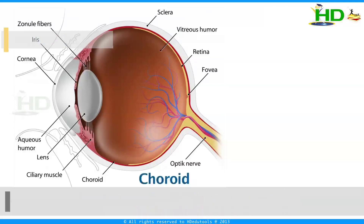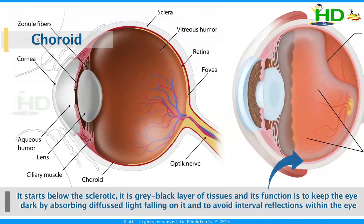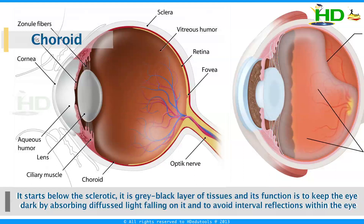The choroid starts below the sclerotic. It is a grey-black layer of tissues and its function is to keep the eye dark by absorbing diffused light falling on it and to avoid internal reflections within the eye.